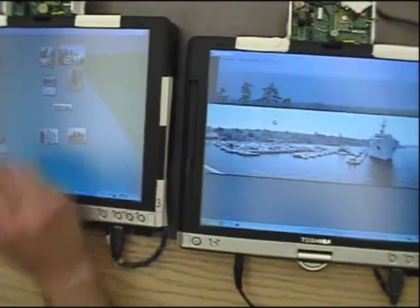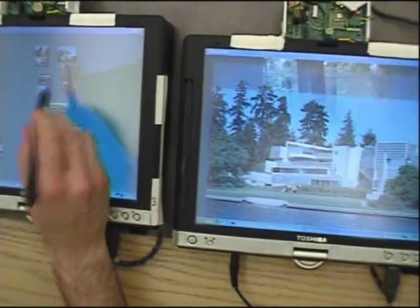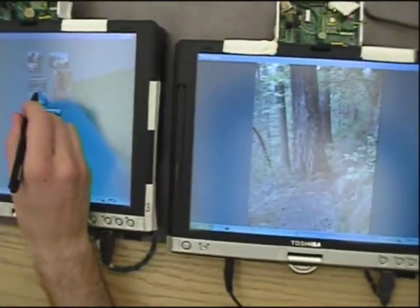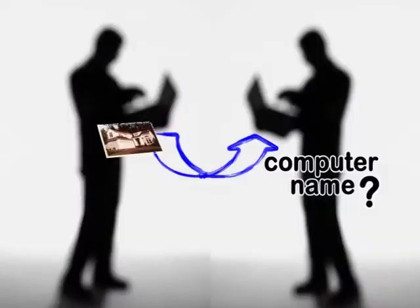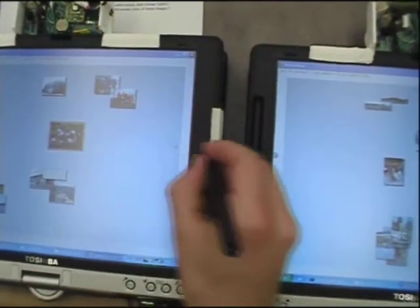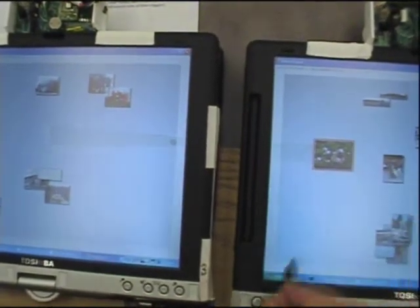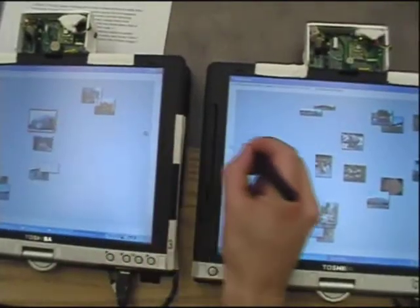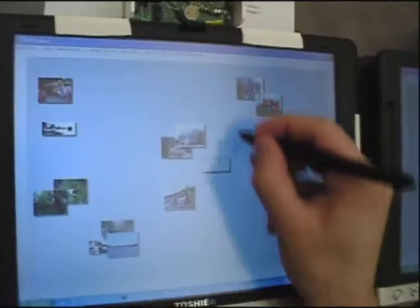Stitching is a new interaction technique that allows users to combine devices by using pen gestures that span multiple displays. For example, giving a photo to someone else normally requires that you know the name of their machine. Instead, by selecting a photo and making a continuous pen gesture onto the other screen, stitching allows the user to do this in a manner similar to drag and drop.